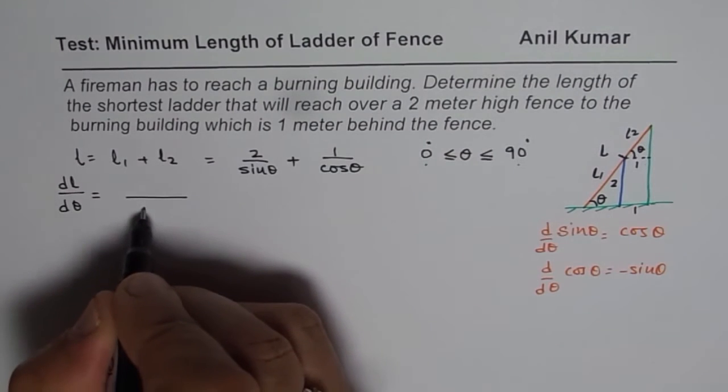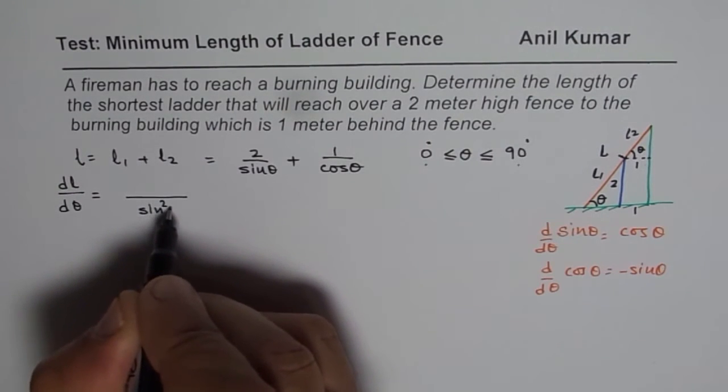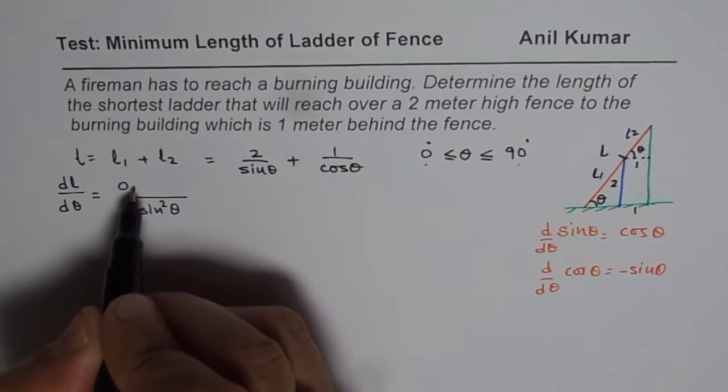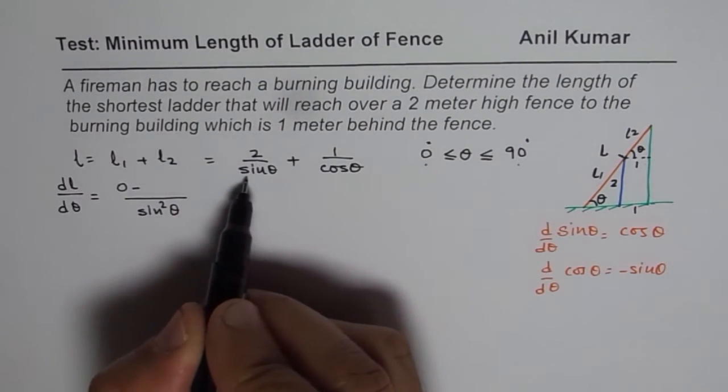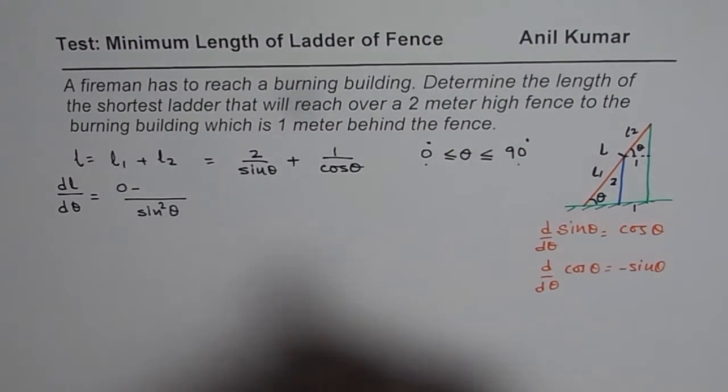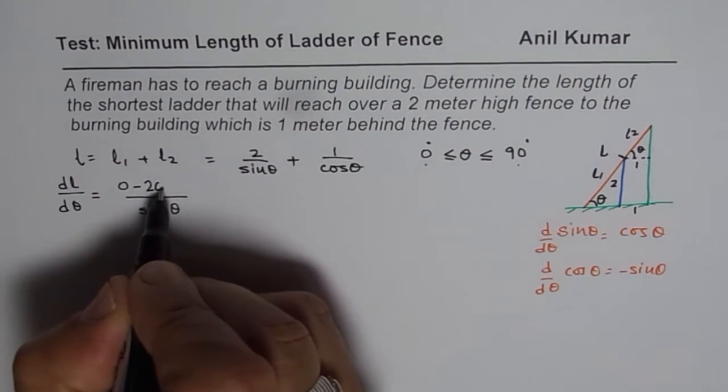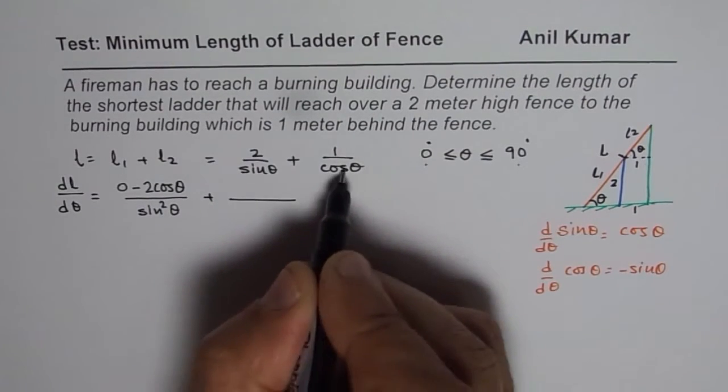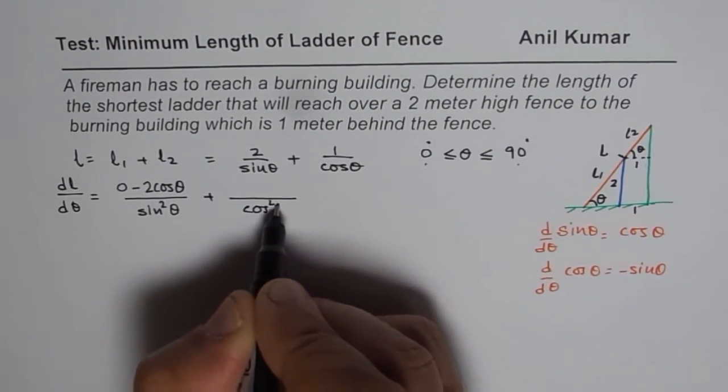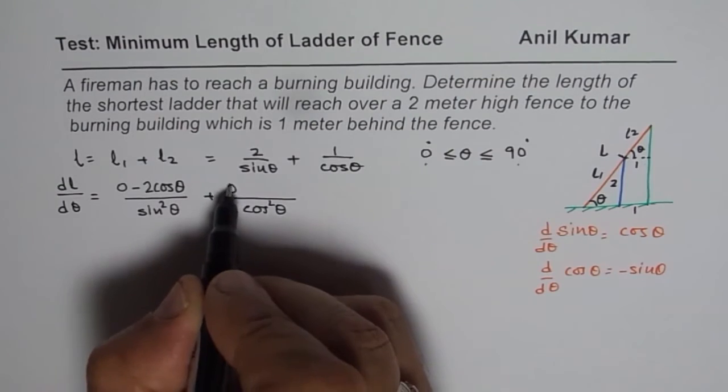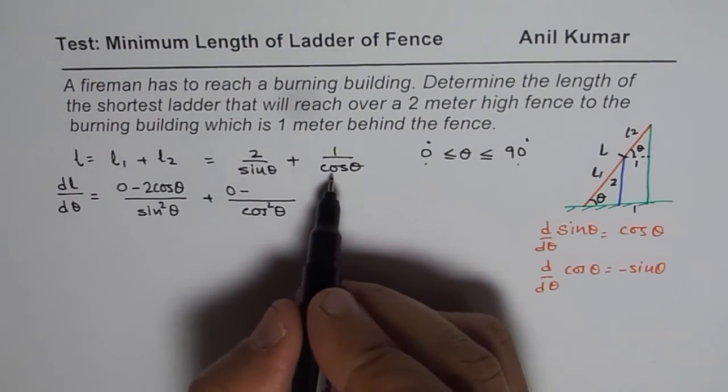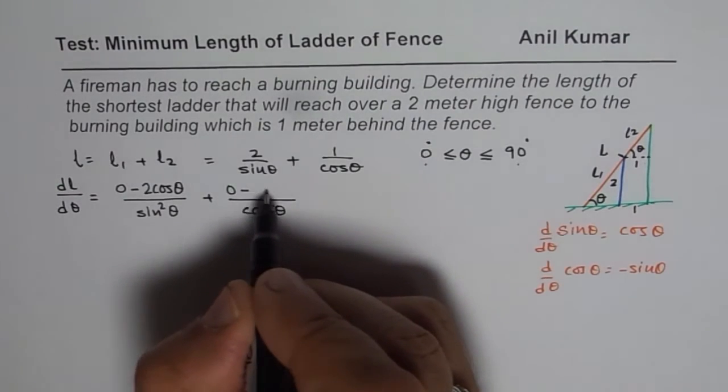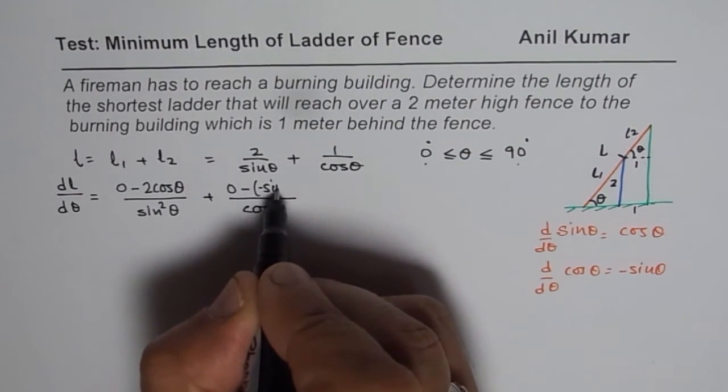For the first term, we get denominator as sine square theta. And here derivative of 2 is 0, so 0 minus 2 times derivative of sine theta, which is cosine theta. So we get -2 cos theta. So that becomes the derivative of the first term. For the next term, we will get cos square theta in the denominator. Derivative of 1 is 0, so 0 minus derivative of cosine theta, which is minus sine theta. So that minus sine theta will make that positive.